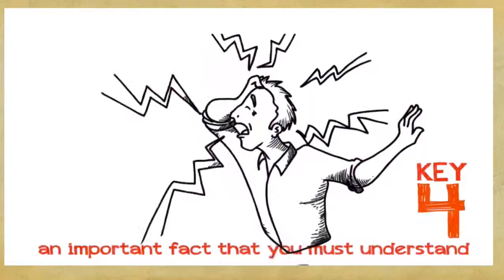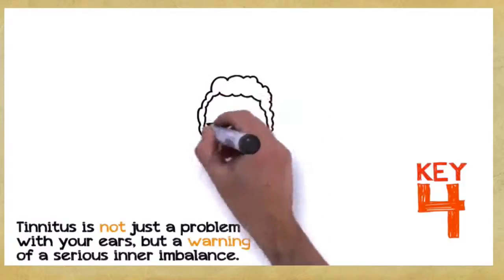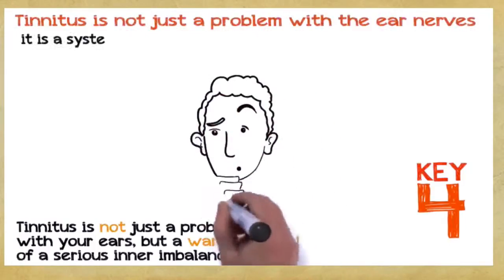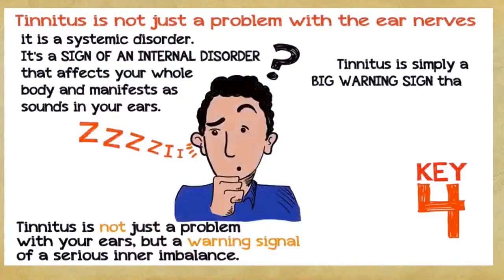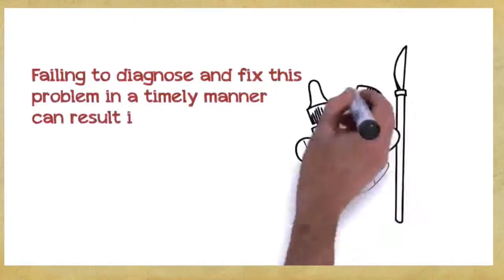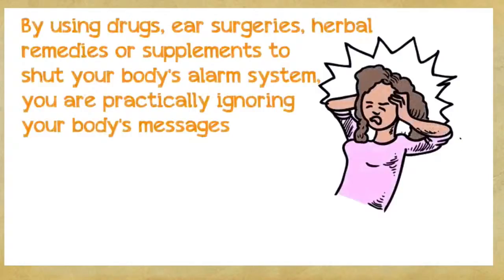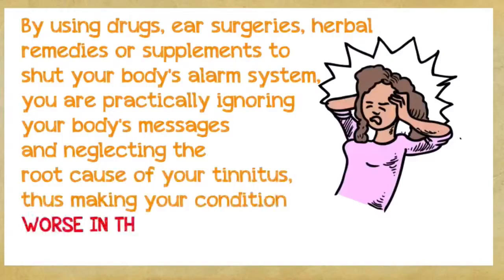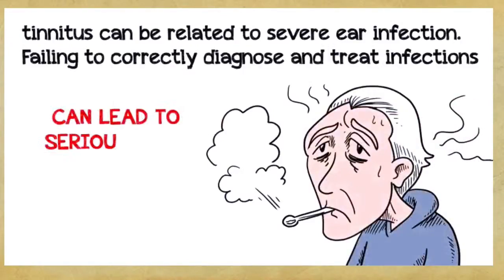Key number four. This is a very important fact that you absolutely must understand if you want to save hundreds or even thousands of dollars. Tinnitus is not just a problem with your ears, but a warning signal of a serious inner imbalance. In the vast majority of cases, tinnitus is not just a problem with the ear nerves, it's a systemic disorder. It's a sign of an internal disorder that affects your whole body and manifests as sounds in your ears. Tinnitus is simply a big warning sign that something inside your system is wrong and needs to be corrected. Failing to diagnose and fix this problem in a timely manner can result in a far more severe and chronic disorder, which can seriously endanger your health. By using drugs, ear surgeries, herbal remedies, or supplements to shut your body's alarm system, you're practically ignoring your body's messages and neglecting the root cause of your tinnitus, thus making your condition worse in the long run. For example, tinnitus can be related to severe ear infection. Failing to correctly diagnose and treat infections can often lead to serious long-term health consequences.